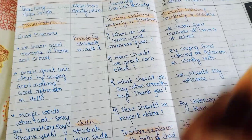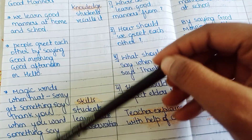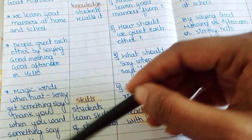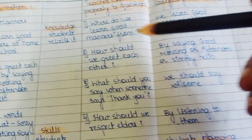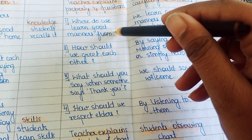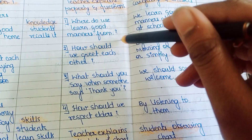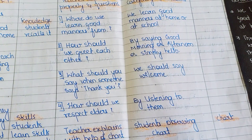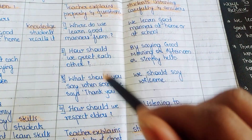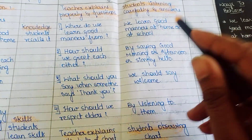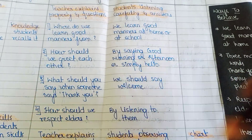In Presentation 1, we have to tell students about what good manners are and write all the good manners they should try to adopt. We teach for about five to six minutes, then the teacher asks four questions: Where do we learn good manners from? How should we greet each other? What should you say when someone says thank you? How should we respect elders? The expected answers are also provided here.